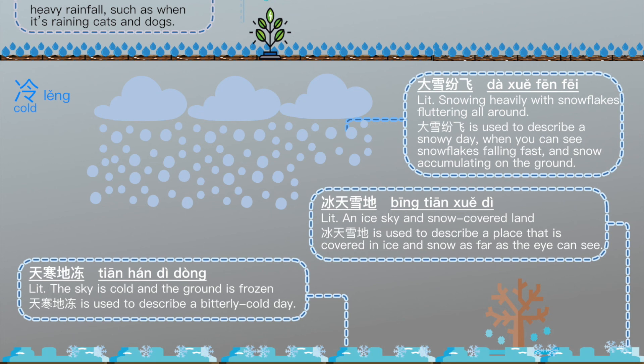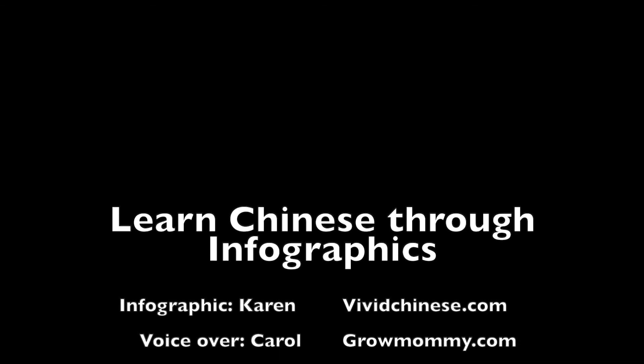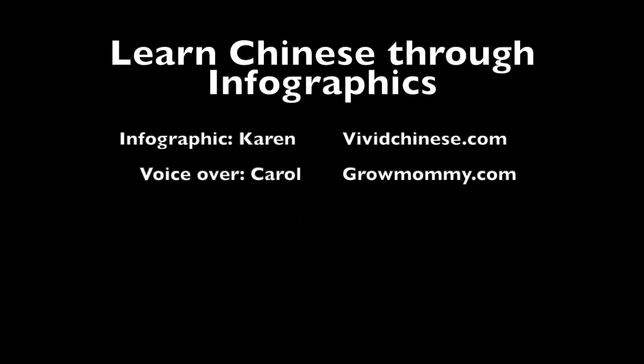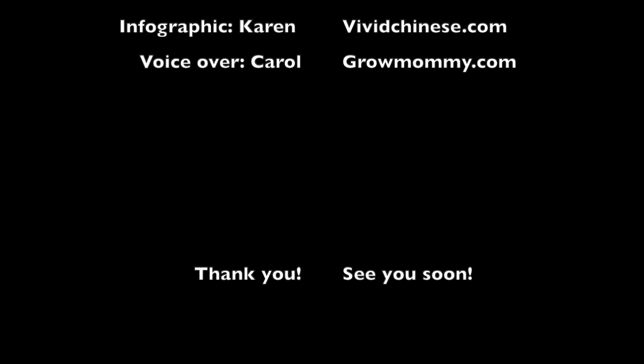And there you have it — 12 different idioms that describe weathers from the extremely hot to absolutely cold. Make sure to include them the next time you talk to someone about weather in Chinese. Visit vividchinese.com for more amazing infographics. For more audio resources, don't forget to subscribe to the GrowMommy YouTube channel. See you next time!